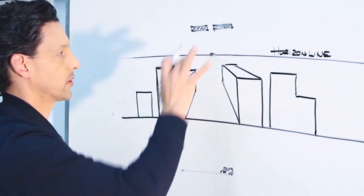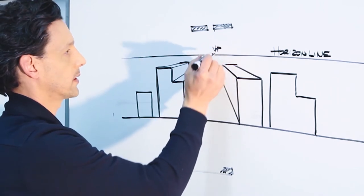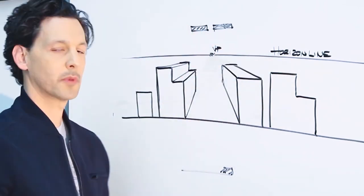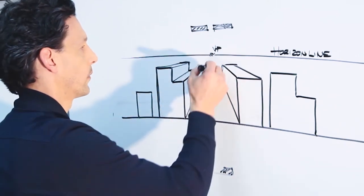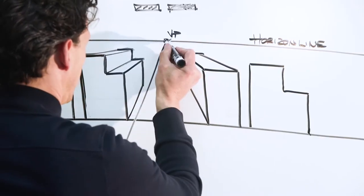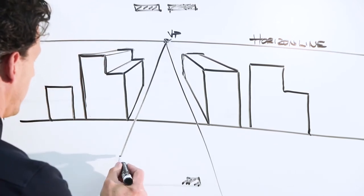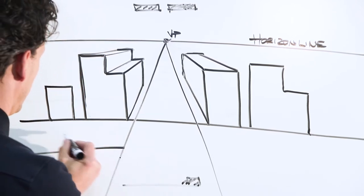Once again, my position based off of my vanishing point and my horizon line probably puts me in about the second or third story of the building across the street.